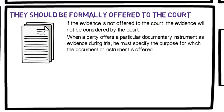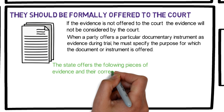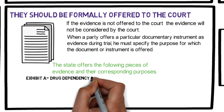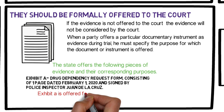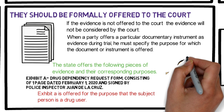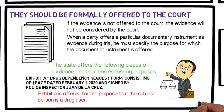For example, at the hearing or trial, the prosecutor will say: 'The state offers the following pieces of evidence and their corresponding purposes. Exhibit A: drug dependency request form, consisting of one page, dated February 1, 2020, and signed by Police Inspector Juan de la Cruz. Exhibit A is offered for the purpose of showing that the subject person is a drug user.' This topic is related to the Parol Evidence Rule, Best Evidence Rule, and Secondary Evidence, which will be discussed in future videos.